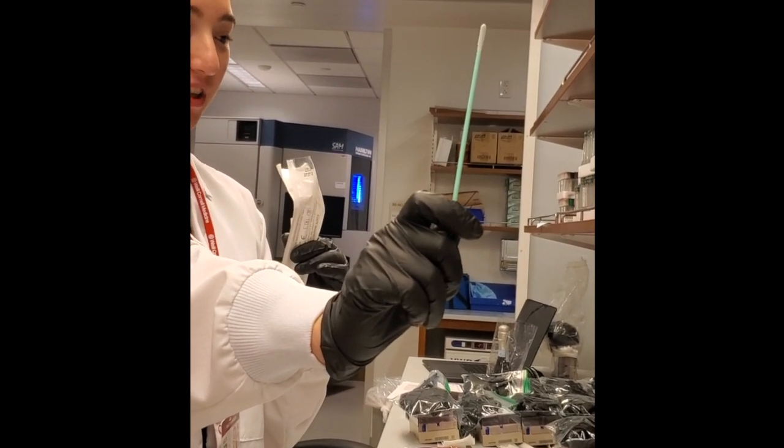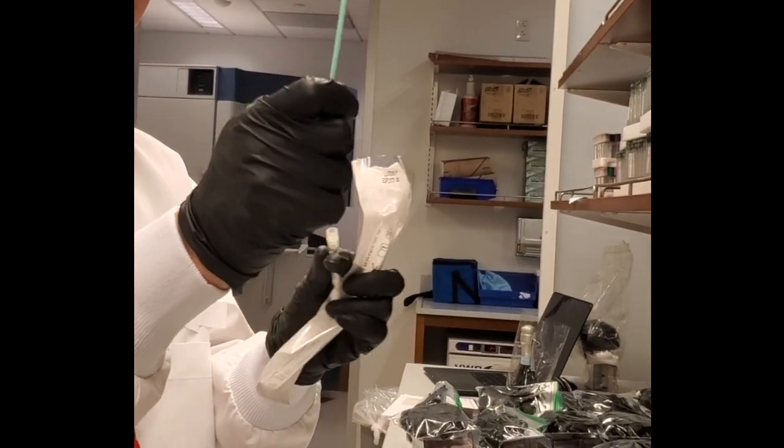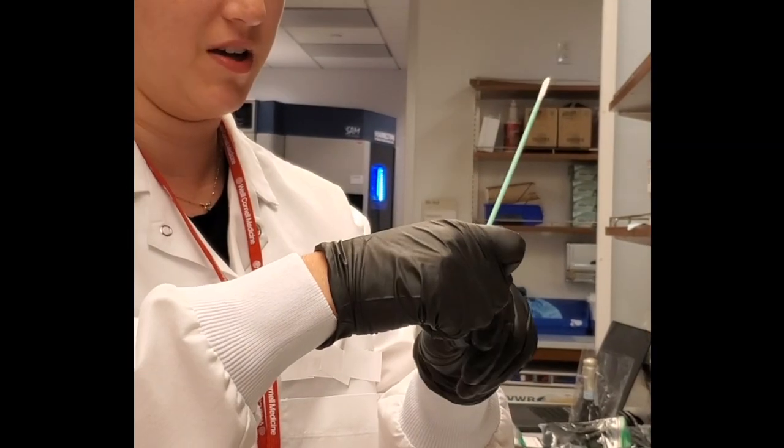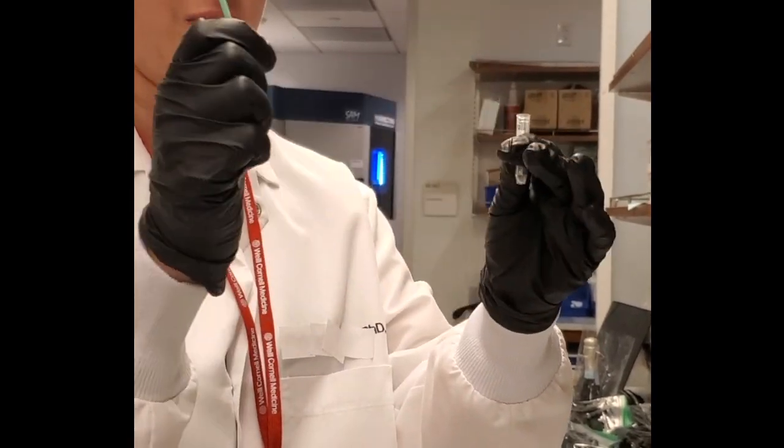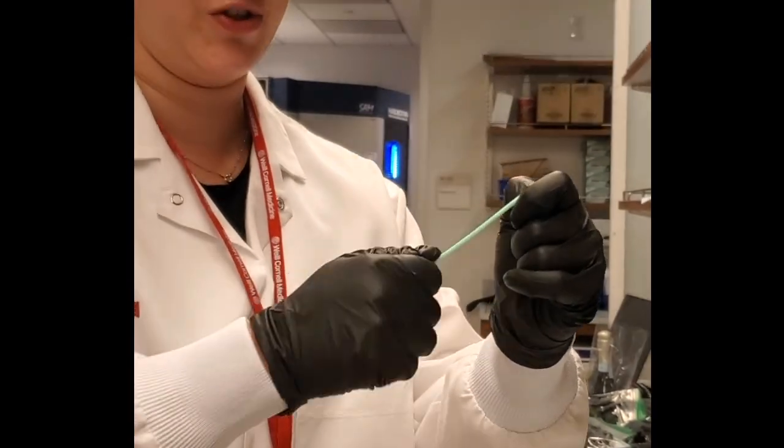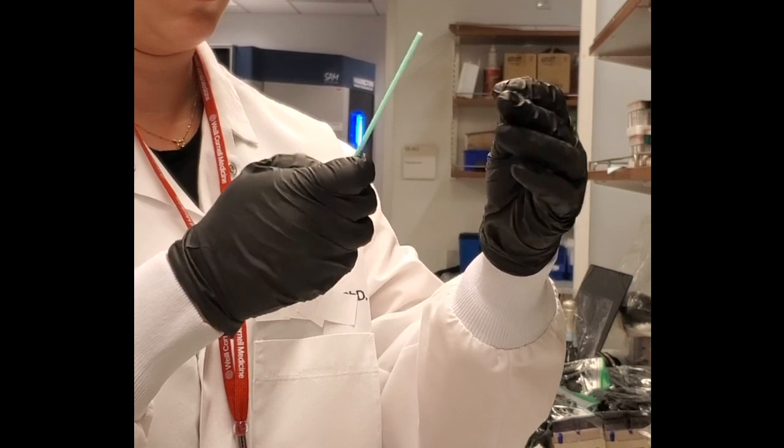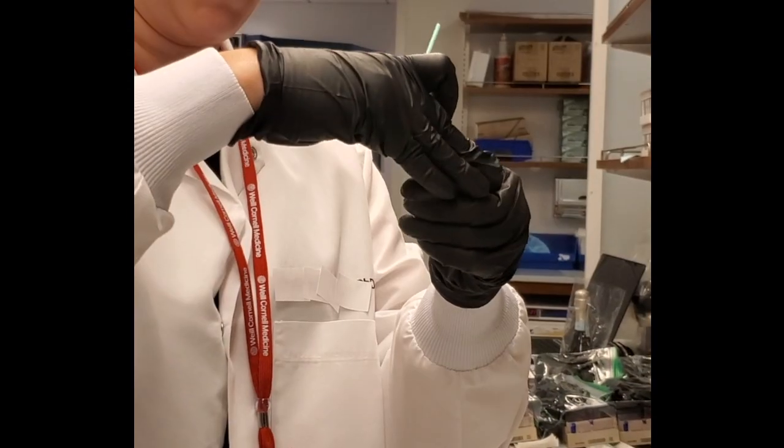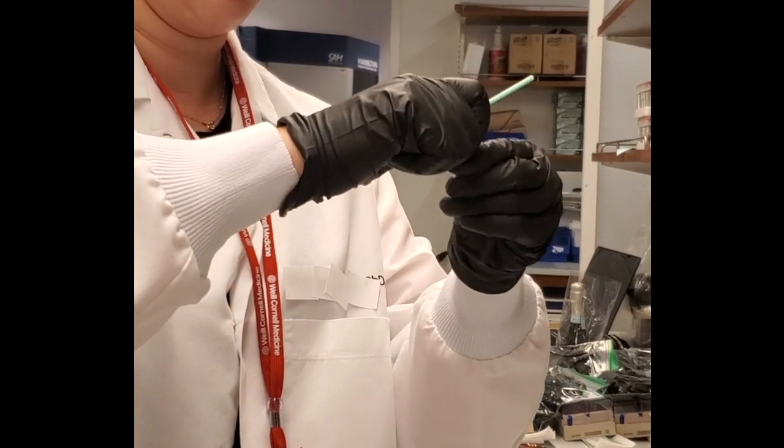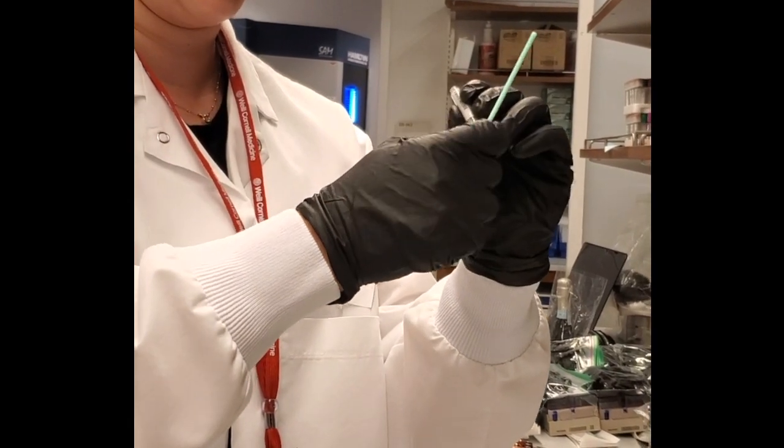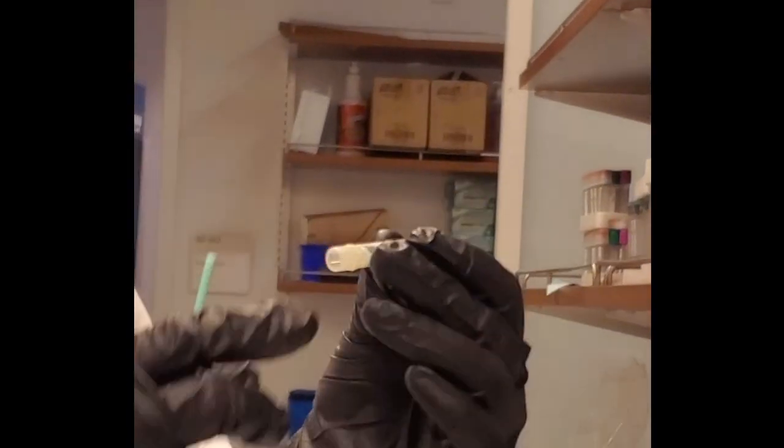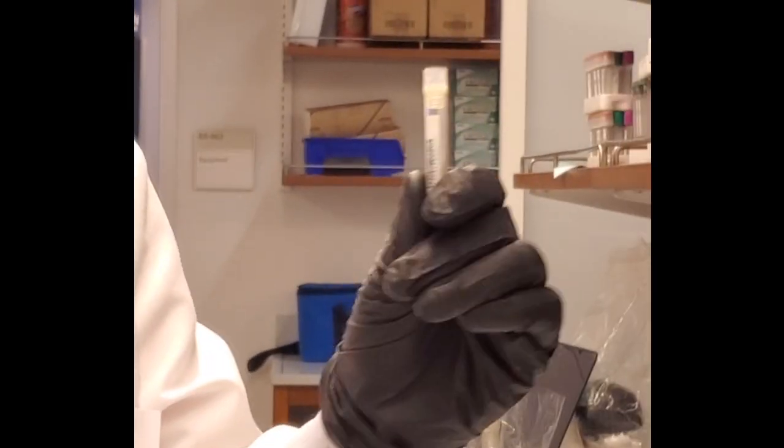Once you are done, take it and just as if you were performing an experimental sample, take your swab and snap it off into your tube, close it, and make sure to mark down the bar-coated tube. You have completed one negative control.